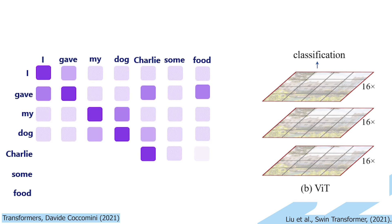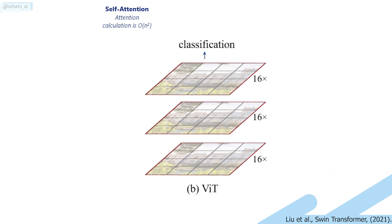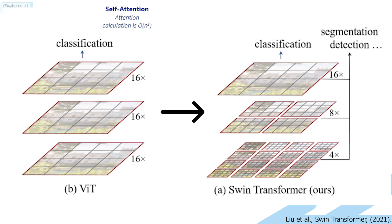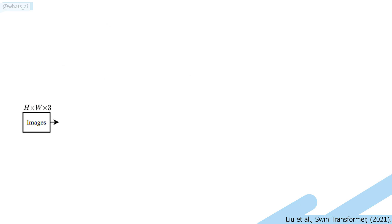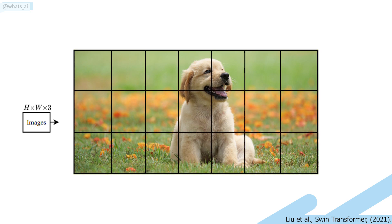The challenge is that the computational complexity of self-attention is quadratic to the image size, thus exploding computation time and memory needs. Instead, the researchers replaced this with a linear computational complexity to image size. The process is straightforward: an RGB image is sent to the network, split into patches, and each patch is treated as a token whose features are the RGB values of the pixels themselves.